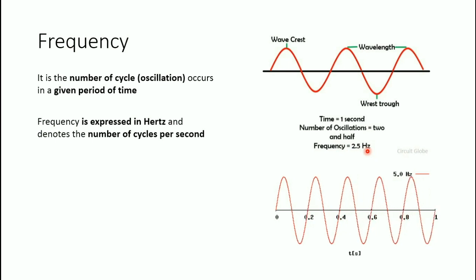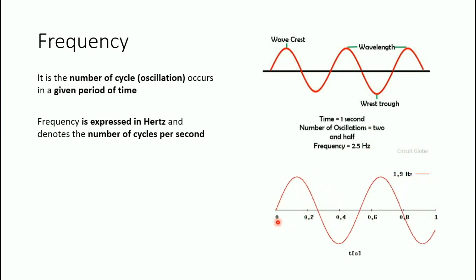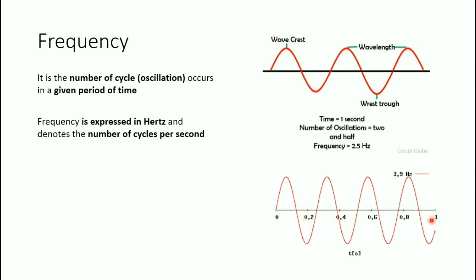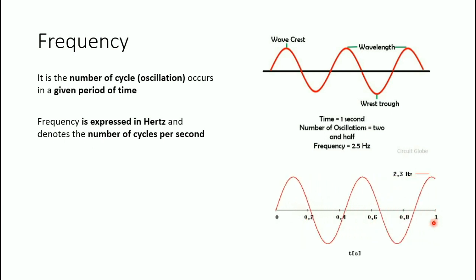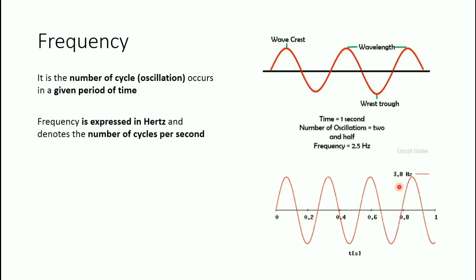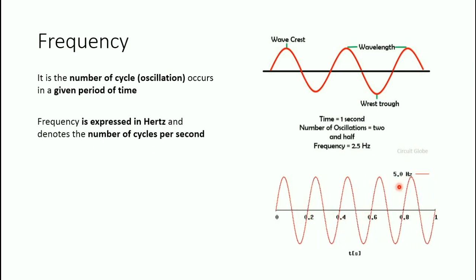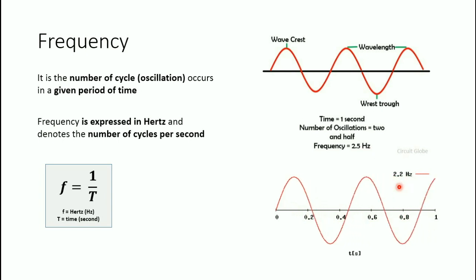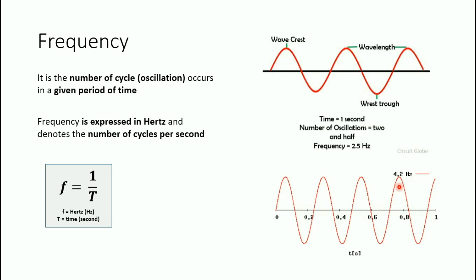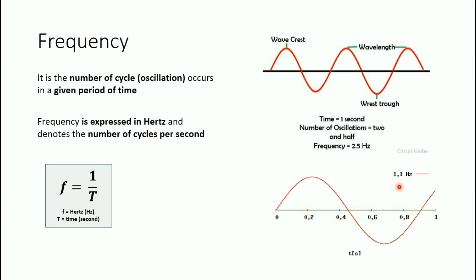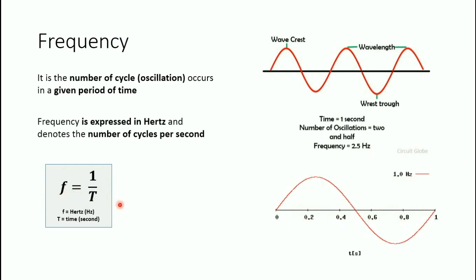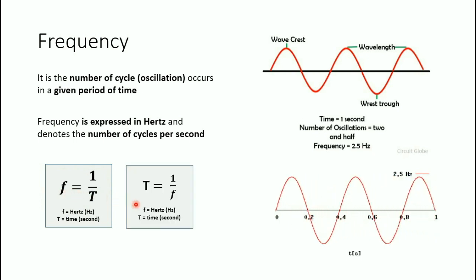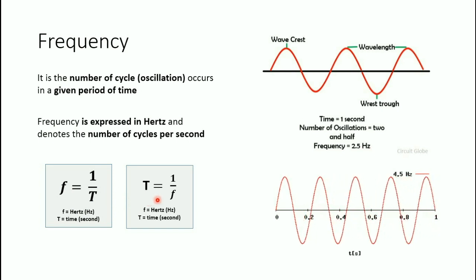To further understand: this illustration shows that from zero to one second, more cycles within one second means higher frequency. Now, frequency has the general formula f equals 1 over T, where f is frequency expressed in hertz and T is time in seconds. We can also use cross multiplication to get the relation: time is equal to 1 over frequency.